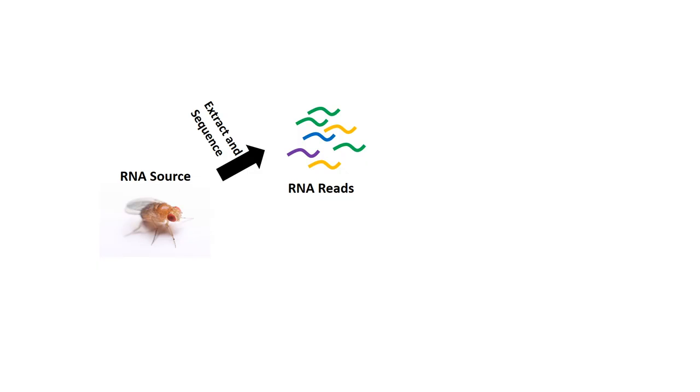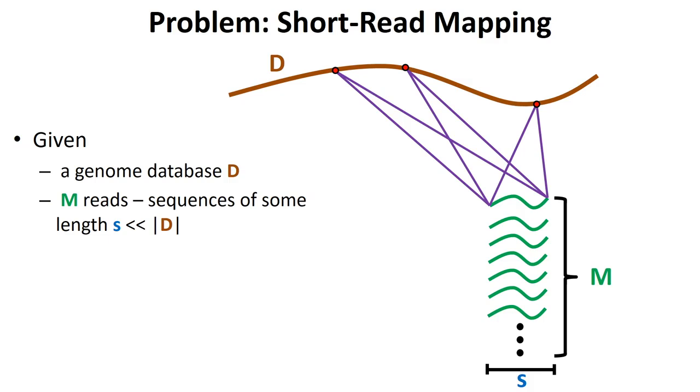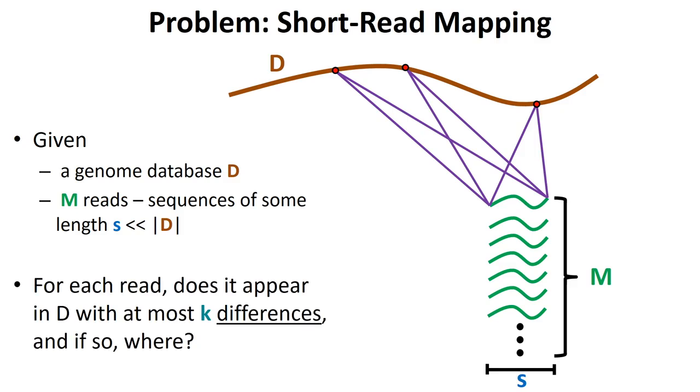After the sequence data have been obtained, we need to map the RNA-seq reads to the genome so that we can determine the genes that are being expressed. This is a difficult computational problem. The sizes of the genome assembly for eukaryotes can range from tens of millions to tens of billions of bases, and the Illumina sequencer can produce hundreds of millions of RNA-seq reads. In addition, because of sequencing errors and polymorphisms, we need to allow for a small number of differences between the RNA-seq reads and the genome assembly.